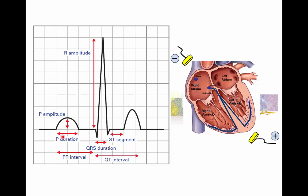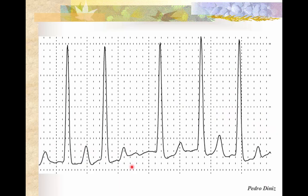Waves on ECGs are not that difficult to identify once you get familiarized with their format and morphology. The first wave we have is the P wave, followed by the QRS complex and the T wave. However, in some circumstances we might have ECGs where P waves and T waves look quite similar and may not be easy to identify in a given trace.